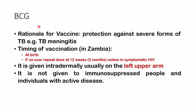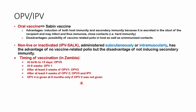With the BCG, the rationale is that it protects against severe forms of TB, for example TB meningitis. The times we give this vaccine include at birth as well as between 13 to 14 days after birth. If there is no scar, you could repeat this at 12 weeks — about 3 months — unless the person is symptomatic with HIV. This is usually given intradermally on the left upper arm. We do not give this to immunosuppressed people or individuals with active TB disease, as the vaccine would be useless.